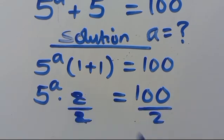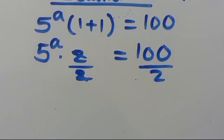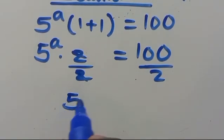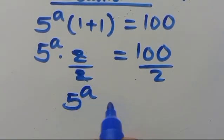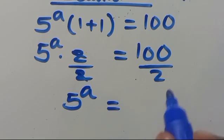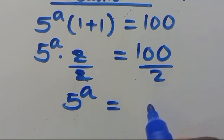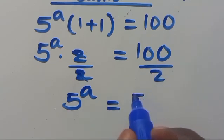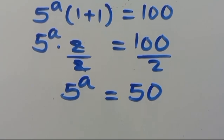So from here we have 5 to the power of a times 2 equals 100. Dividing both sides by 2, we get 5 to the power of a equals 100 divided by 2, which gives us 50.